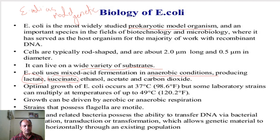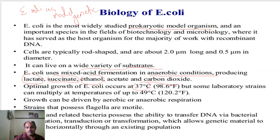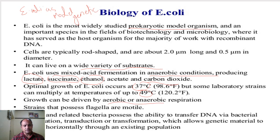Under mixed acid fermentation, E. coli produces lactic acid, succinic acid, ethanol, acetic acid, and carbon dioxide. The optimum temperature for E. coli growth is 37°C, and some laboratory strains can multiply at temperatures up to 49°C. Growth can be driven by aerobic as well as anaerobic respiration. E. coli strains have flagella for movement, so they are motile.